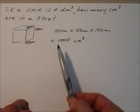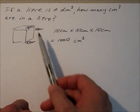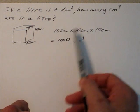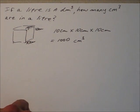How many cubic centimeters are there in a litre? Well, because we know a litre is a cubic decimeter, the answer is there's a thousand cubic centimeters in a litre.